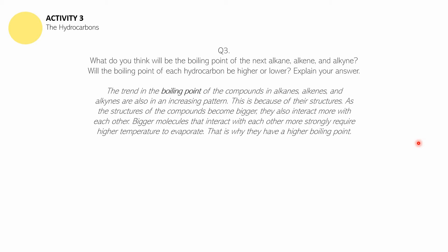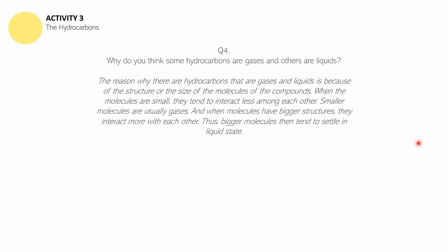The answer to question number four: The reason why some hydrocarbons are gases and others are liquids is because of the structure or size of the molecules. When the molecules are small, they tend to interact less with each other. Smaller molecules are usually gases, and when molecules have bigger structures, they interact more with each other — thus bigger molecules tend to settle in liquid state.